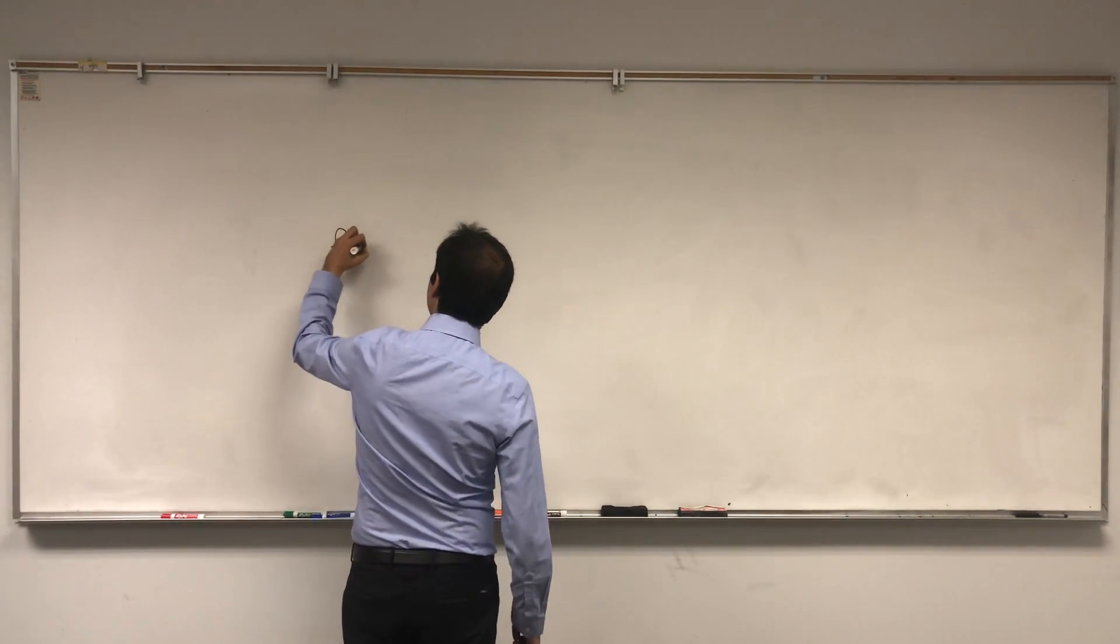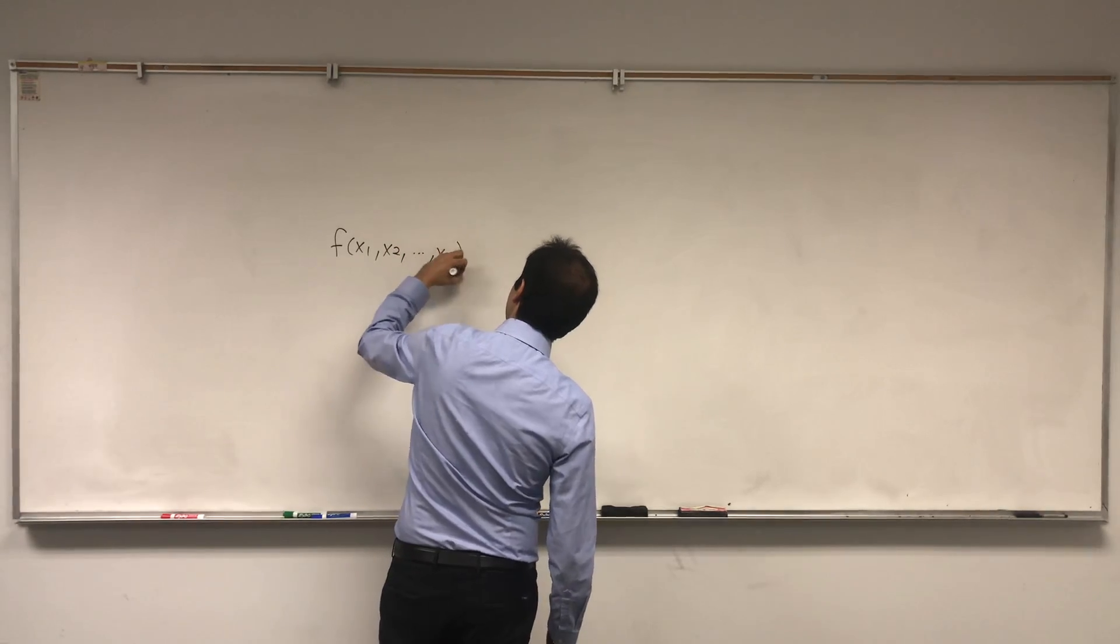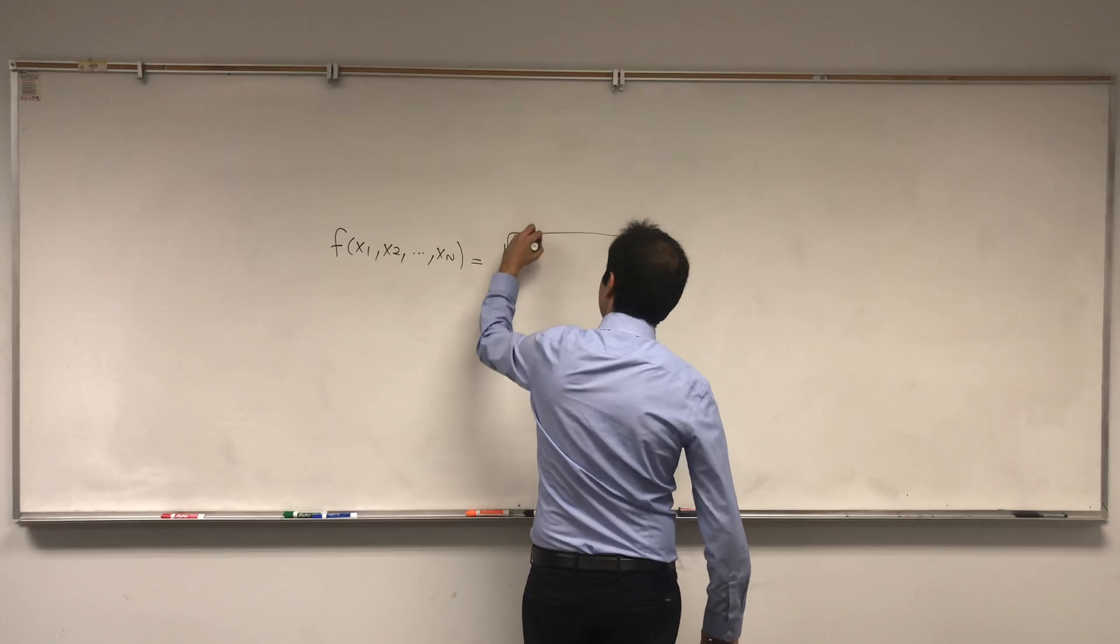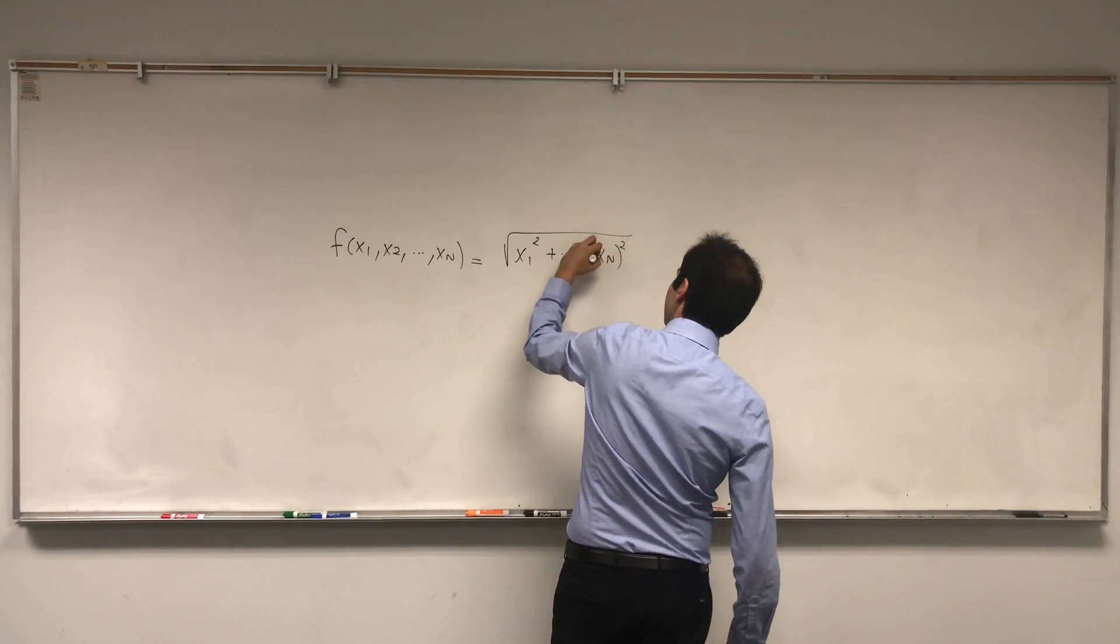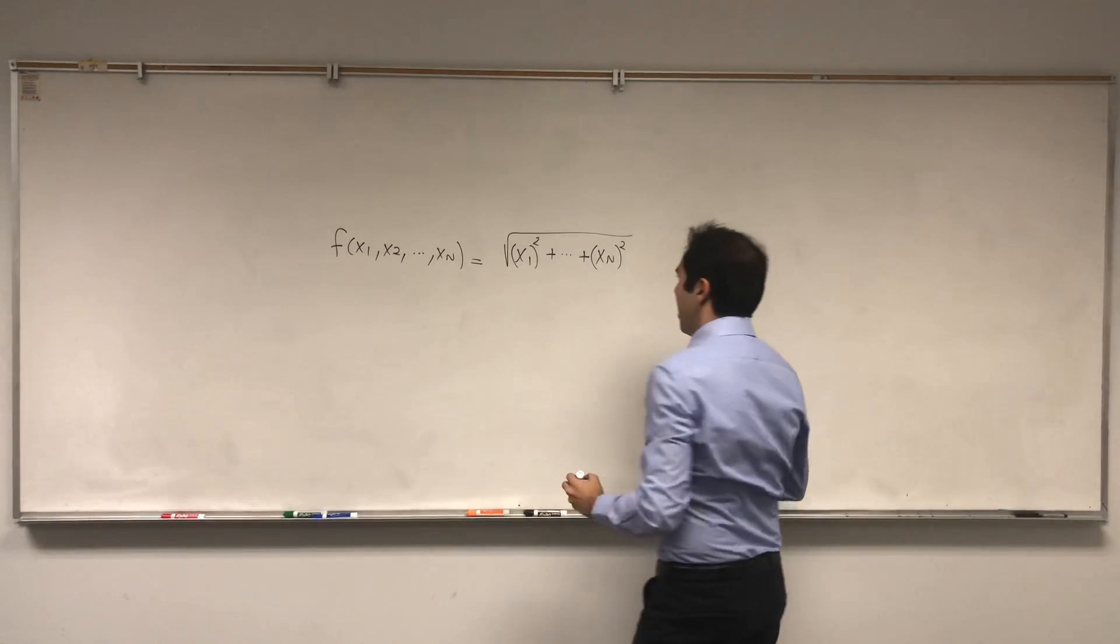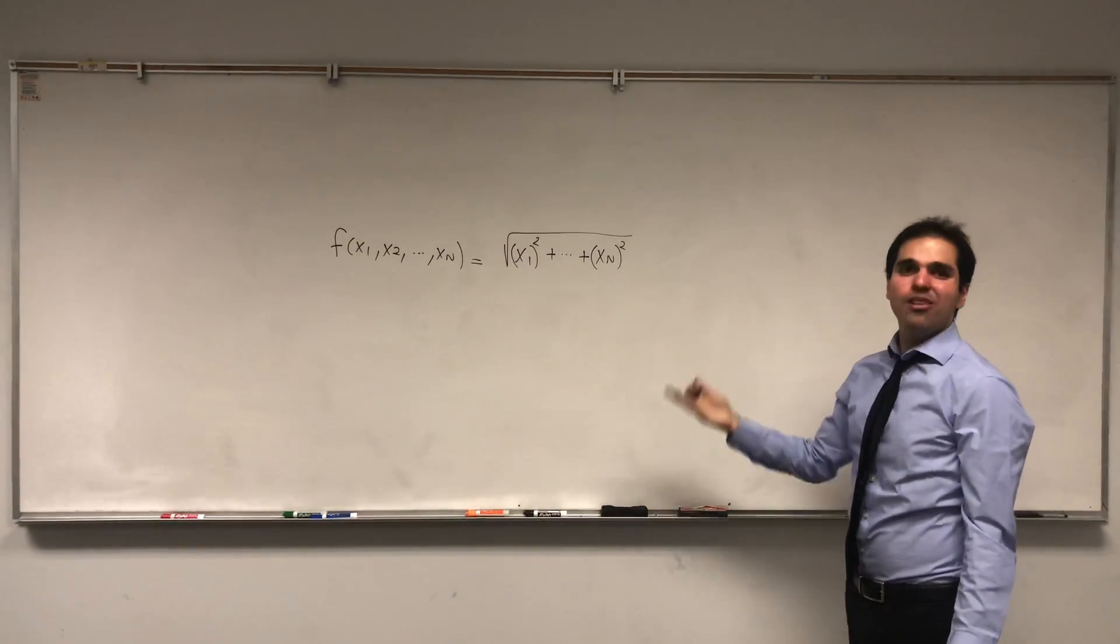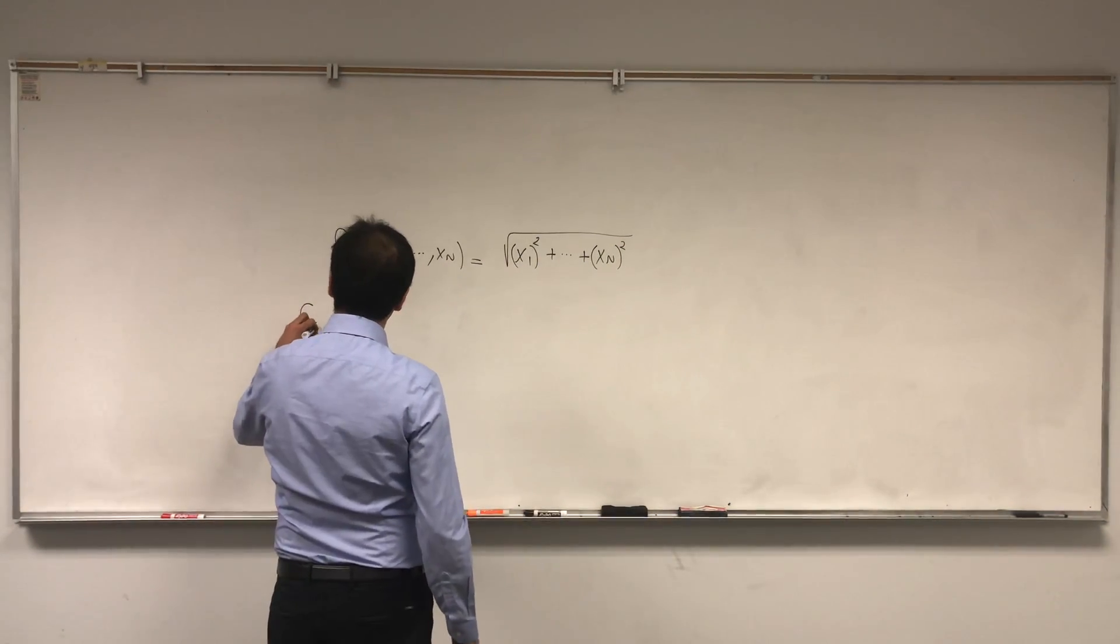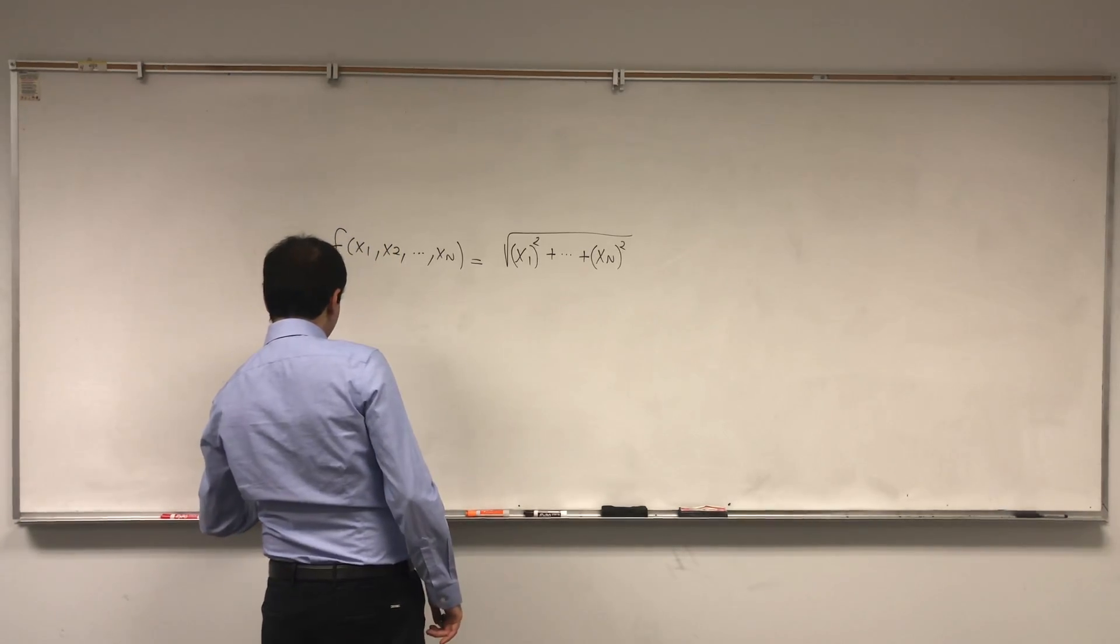So consider the following function: f of x1, x2, up to xn, which is just square root of x1 squared plus dot dot dot plus xn squared. And the first question, not too bad, is find all the partial derivatives of f. So find fx1, fx2, dot dot dot, up to fxn.